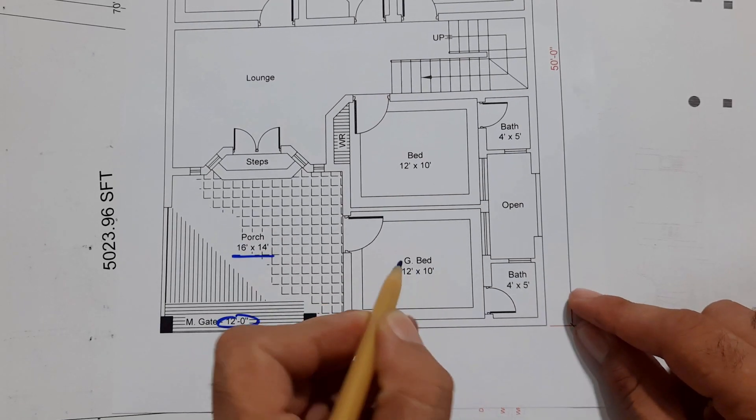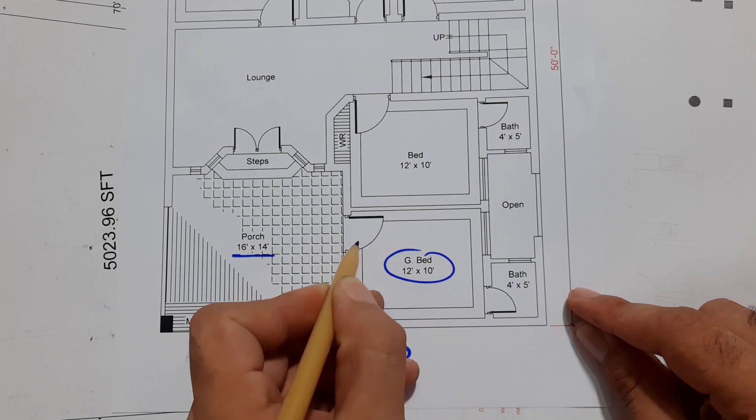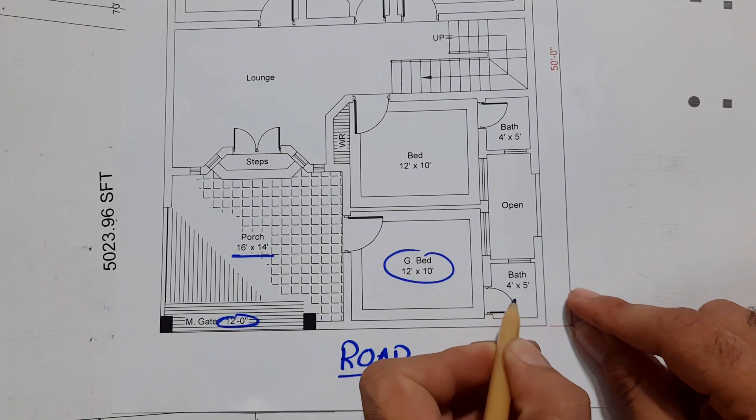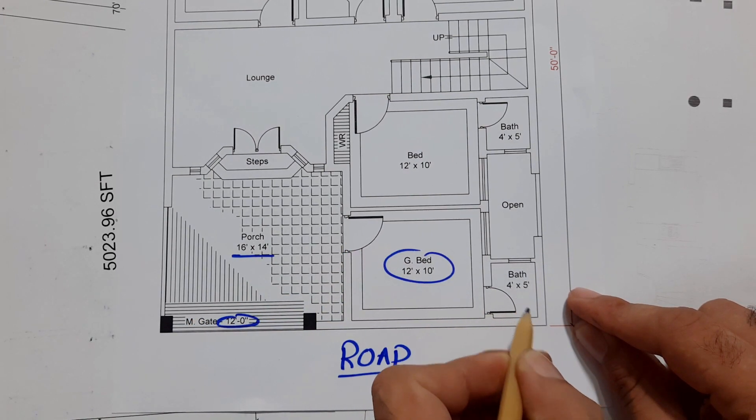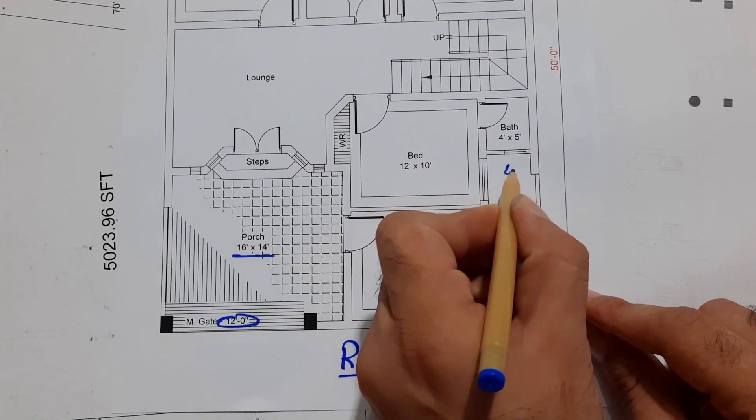Next, you can see here we have the first guest bed which size is 12 by 14 feet. This is its door. Next you can see this is the bath - size of the bath is 4 by 5 feet. This is its ventilation to this open sky and its width is 4 feet.